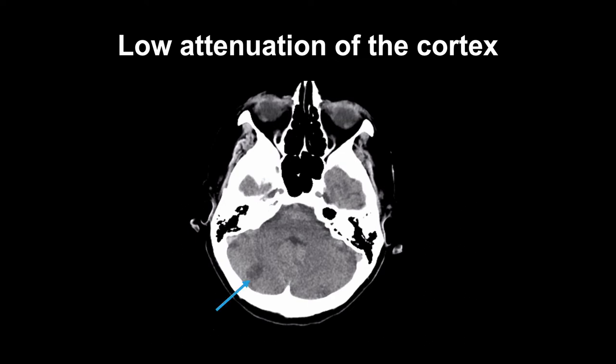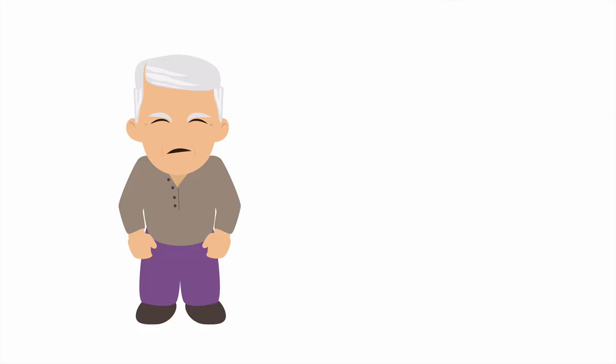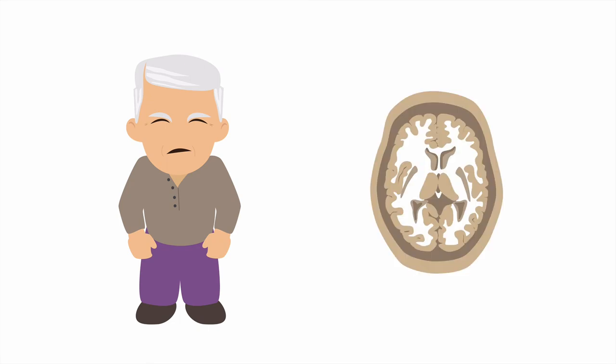A cerebellar infarct was evident on this patient's CT scan that proved to be secondary to a right vertebral dissection on vascular imaging. But this finding is often inapparent or artifactual, especially if there's age-related atrophy of the cortex.